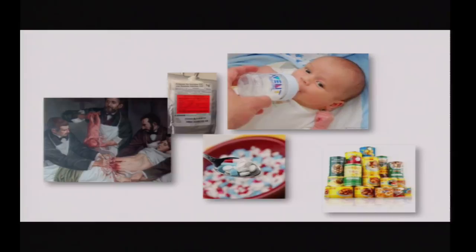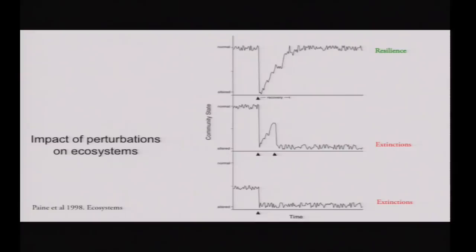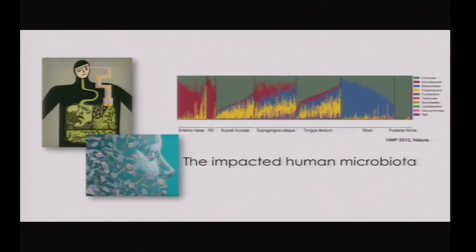We do compounded perturbations right at birth and later. Not only do we perform c-sections, we give antibiotics during c-sections and to all strep B-positive mothers. Then we typically bottle feed, especially c-section babies. Then we give antibiotics because the baby has otitis. When able to eat, we give processed food. Basic principles in ecology tell us that if you impact an ecosystem before it recovers and perturb again, that can lead to extinctions.